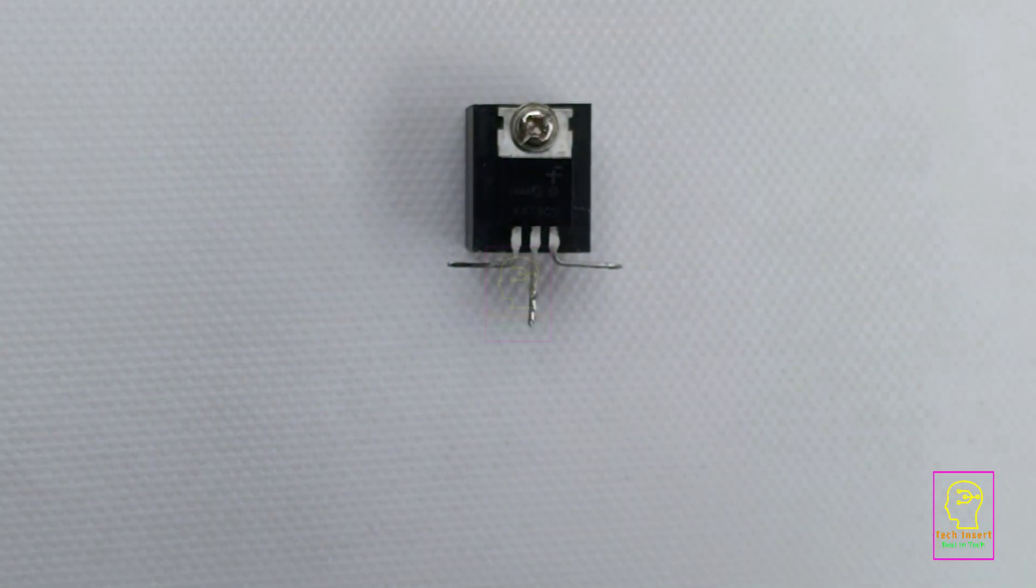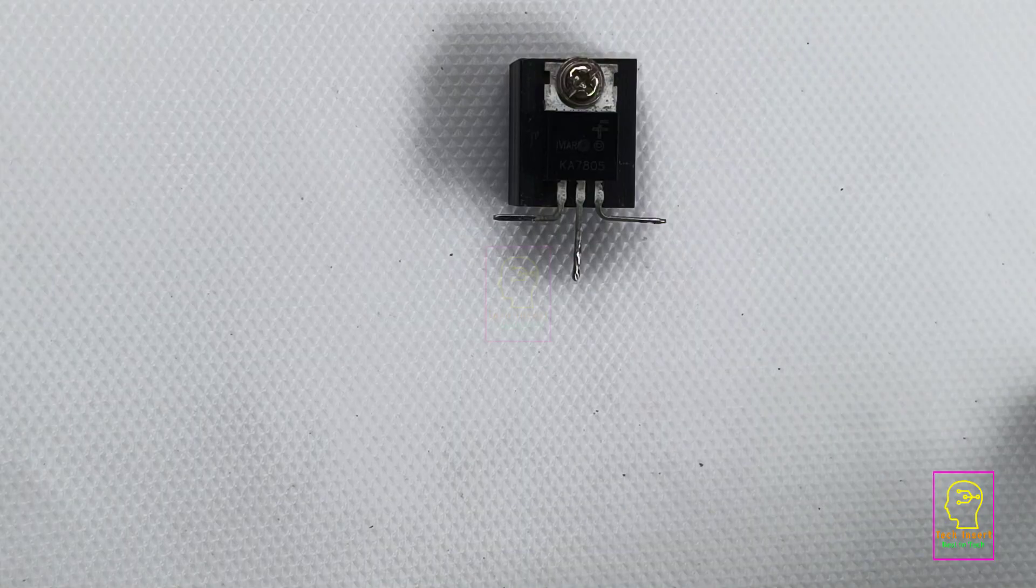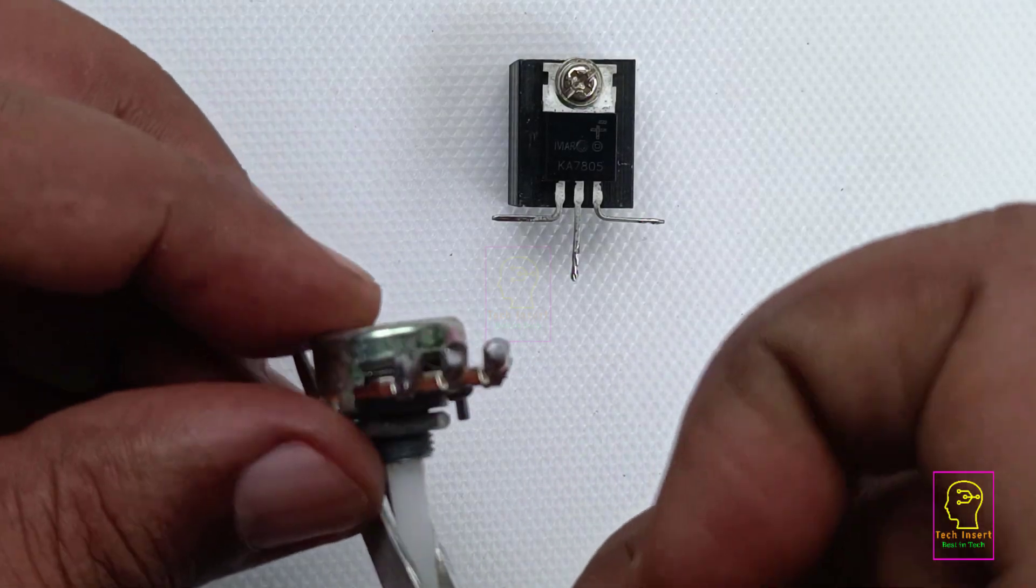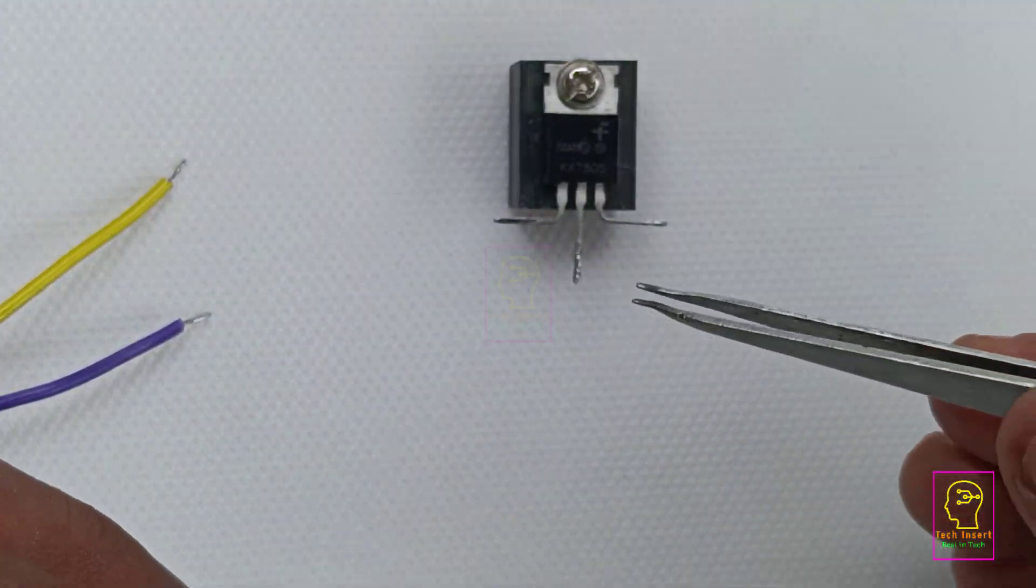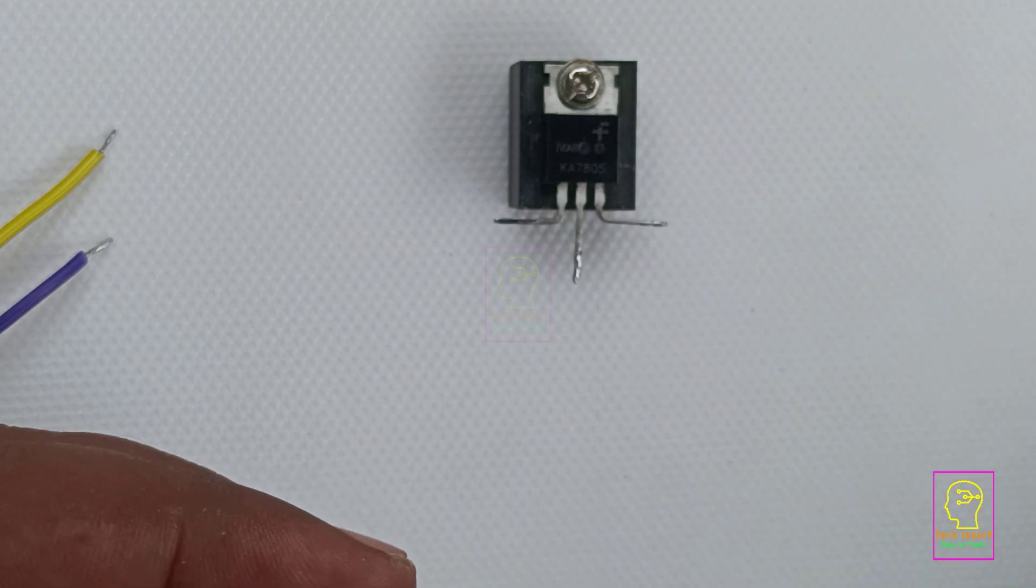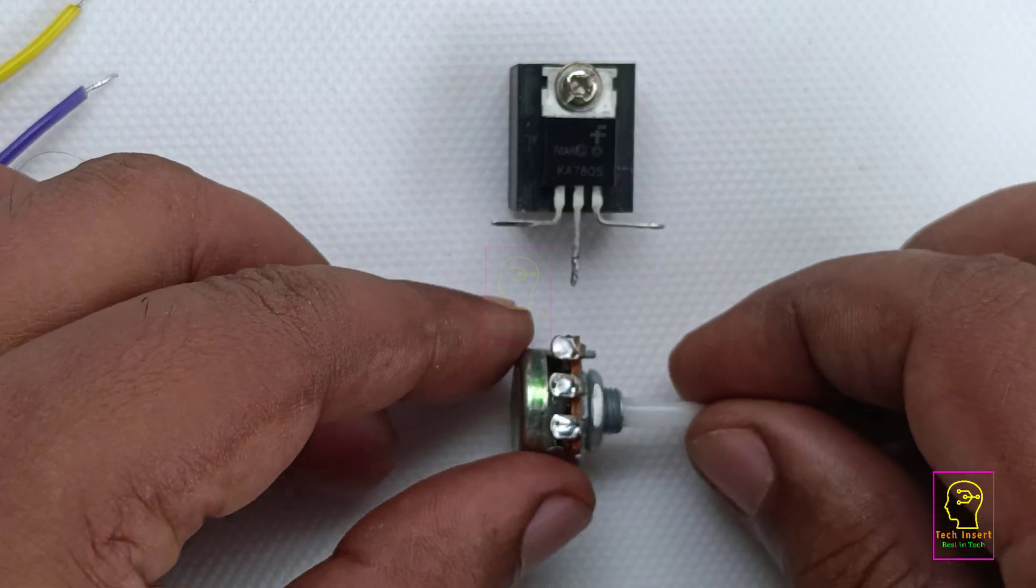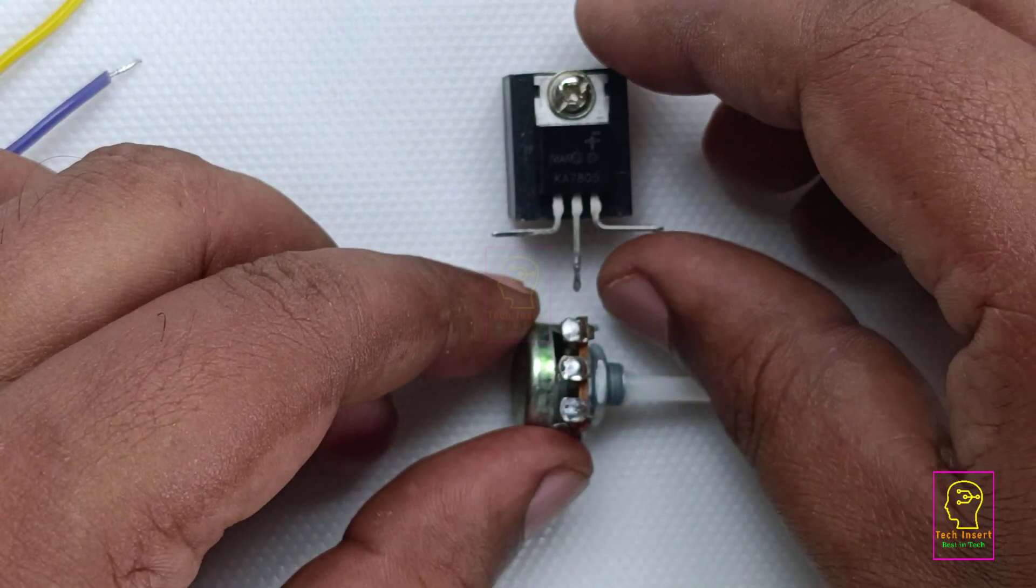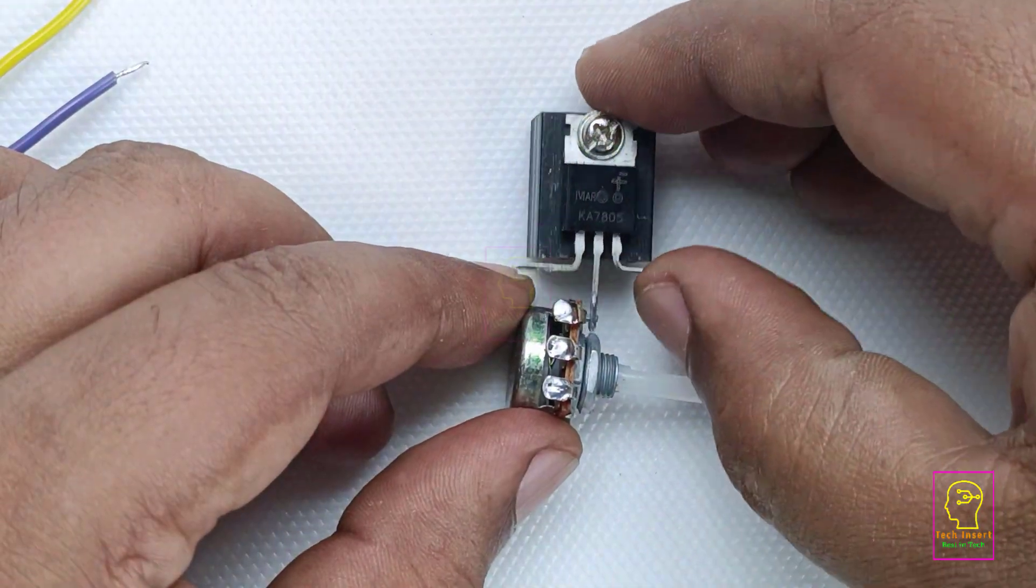You can also make use of 5k. I prefer to use a preset rather than using this variable control. Now I have tinned these terminals. I do not have a preset with me, that is why I am using this variable resistance. What we are going to do is connect one terminal of this variable resistance to the common point of this chip. I am going to solder this exactly as shown in this video.